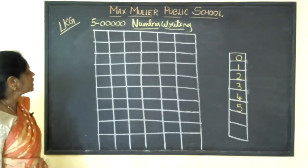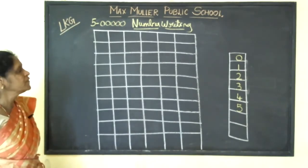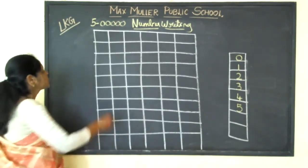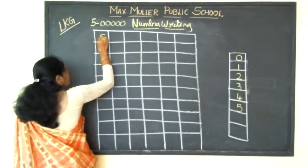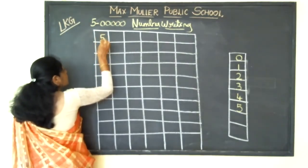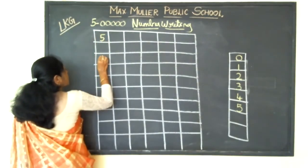So today you are going to learn five. How do you are going to write five? Sleeping line, standing line, curve. Five.